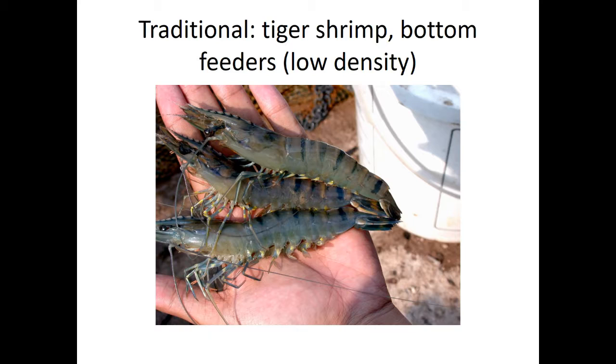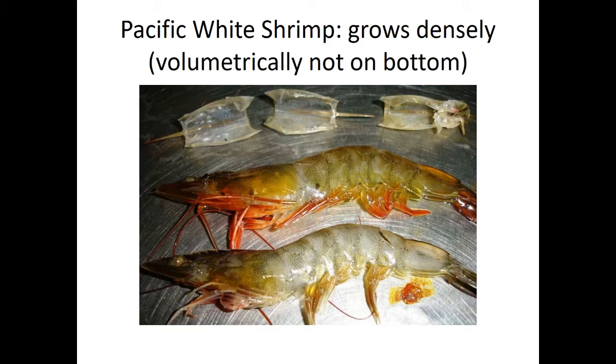Tiger shrimp, the traditional bottom-feeding shrimp, can grow bigger than lobster but can't be produced densely in volume. They're being replaced by vaname shrimp from Latin America, partly because of disease problems with monodon and partly because vaname can be produced volumetrically in massive amounts, floating in the water column. Shifting to species that can be stocked densely requires aeration — you need oxygen for high-density ponds.